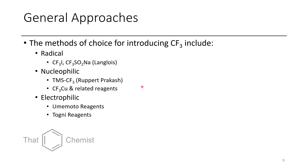There are three different approaches: radical, nucleophilic, and electrophilic. In the case of radical chemistry, usually CF3I or Langlois reagent is used. In the case of nucleophilic CF3 addition, usually TMS-CF3, the Ruppert-Prakash reagent, is used. For aryl or cross-coupling chemistry, copper CF3 salts are the best source of CF3. And then for electrophilic reagents we have Umemoto reagents as well as Togni reagents.